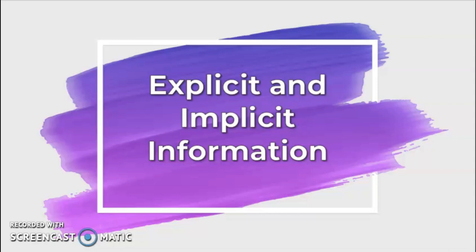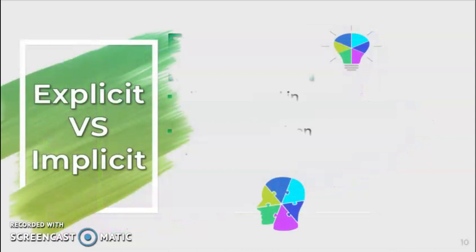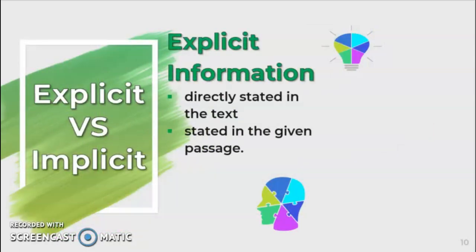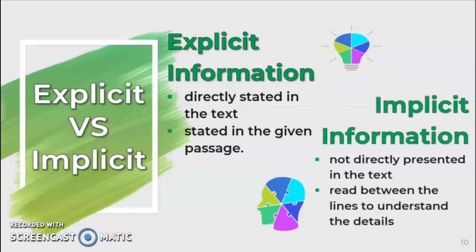So now, let's try to identify the difference between the two. When we say explicit information, it tells about something that is directly stated in the text — it is stated in the given passage. On the other hand, implicit information is not directly stated in the text, and you have to read between the lines to understand the details that the writer would like to tell the readers.